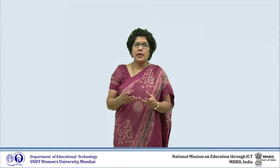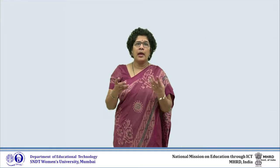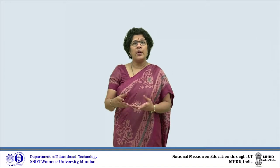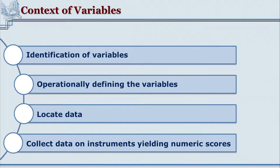Variables are the various factors that are associated with the problem or issue being studied. The researcher identifies the variables right at the beginning, then tries to operationally define them. On the basis of how the variable will be measured, the researcher collects data, finds locations where data will be available, and finalizes the instruments or tools for data collection which take care of measuring that particular variable.